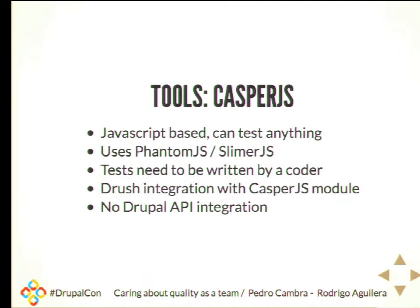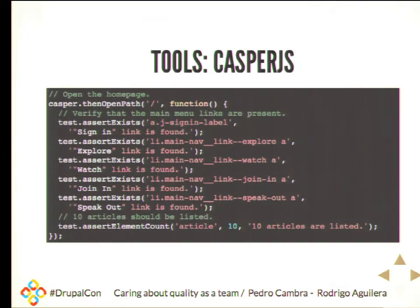That said, if you don't have your project managers or product owners on board, you may want to go for something like Casper.js or similar tools. It is a JavaScript-based testing framework that uses more or less the same tools as Behat but in the JavaScript world. It doesn't have any Drupal integration — it's just a front-end testing tool. It looks like JavaScript. You can't ask your product owner to write it, but if they don't want to write tests, you may want to have code as your tests.